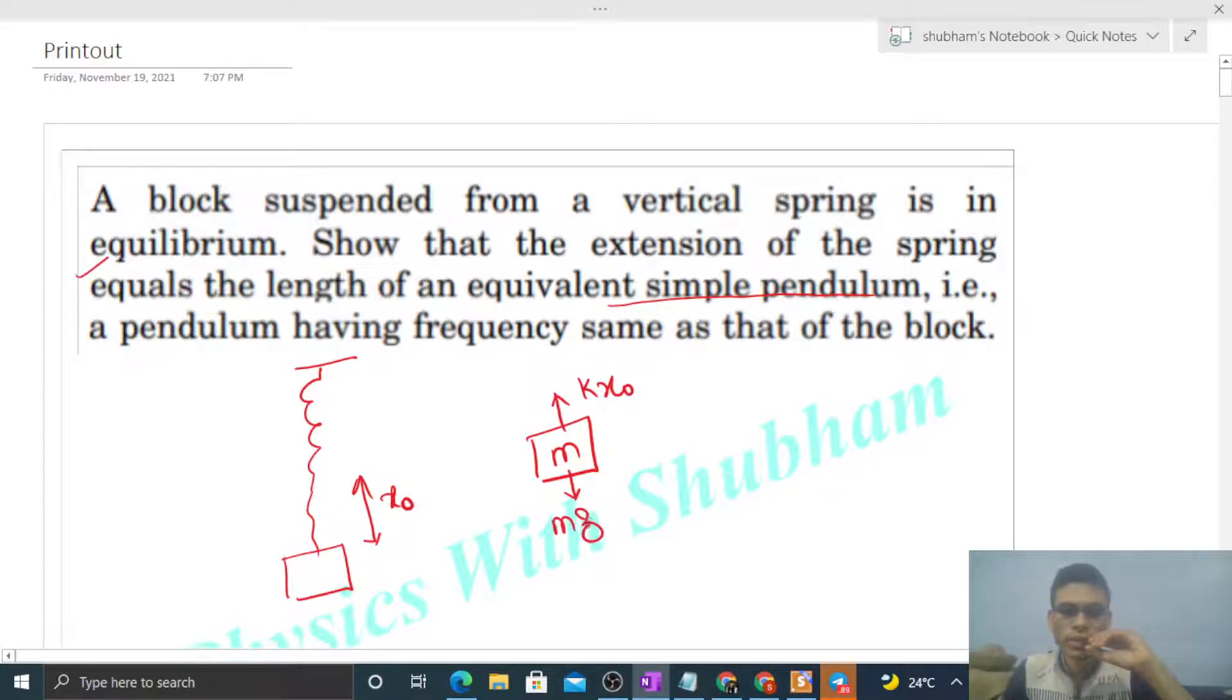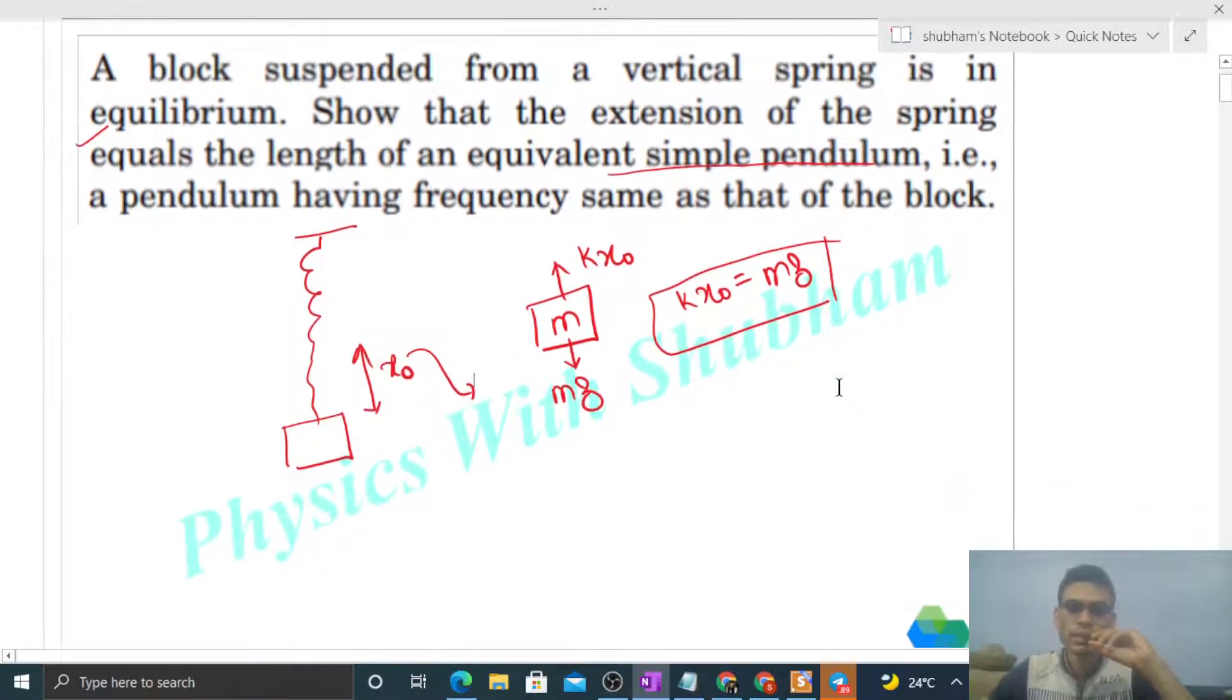The equilibrium condition is that net force should be zero. So k x naught is equal to mg, right? Now this elongation is equivalent to the length of simple pendulum, means this x naught is the length of a simple pendulum.